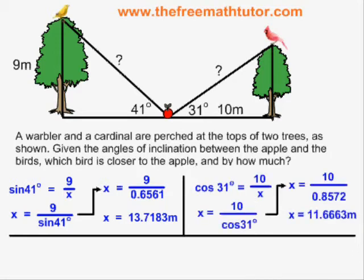Cosine 31 is equal to 10 over x. I plug the values into the formula and simplify, and I get an answer of 11.6663 meters. Again, rounded off to four decimal places.